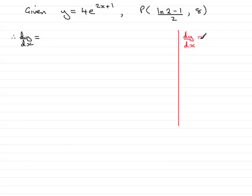So dy/dx is equal to dy by dt multiplied by dt by dx.